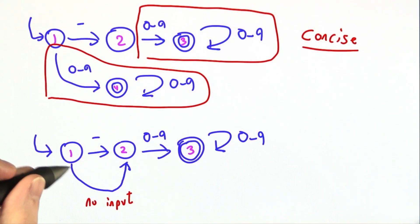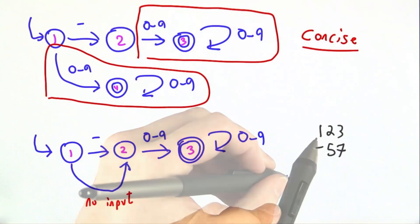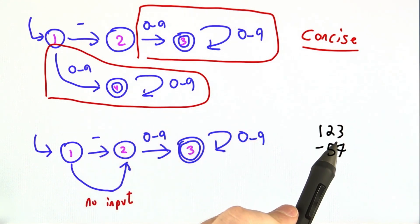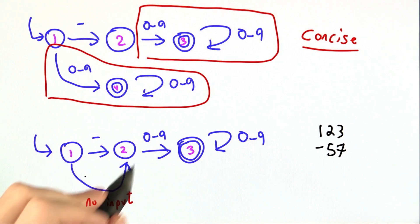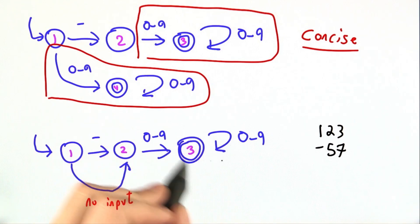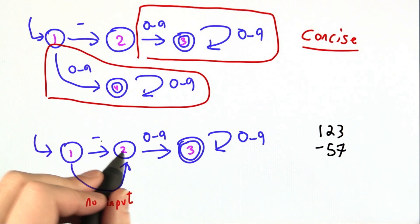So conceptually, it might be simpler to have an edge that somehow consumes no input. This new finite state machine will still accept 1, 2, 3. Here we start in state 1. I don't consume anything and move to state 2, and then it's 1, 2, 3, and we accept. Negative 57, I take the negative, 5, 7, and then we accept.